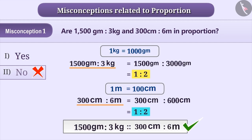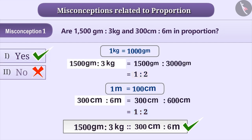Hence, the correct answer is option 1. Whenever you want to find out whether two ratios are in proportion or not, it is necessary to make their units equal.